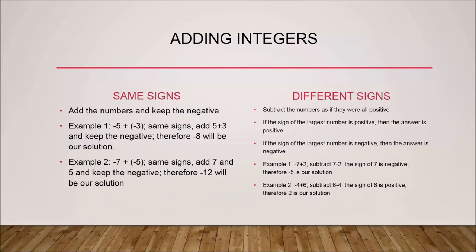In the case of different signs, we subtract the numbers as we regularly do, treating all numbers as positive. If the largest number has a positive sign, the final answer will be positive; if it has a negative sign, the final answer will be negative. For example, we have minus seven plus two — we subtract seven minus two, which equals five.